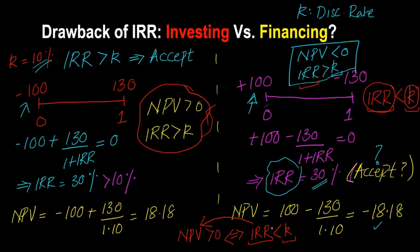This is a drawback of IRR because, as you can see, the decision rule with respect to IRR needs to be changed. For investment projects, IRR should be greater than the discount rate. For financing activities, we need to reverse that. But notice that NPV does not suffer from this drawback — NPV is always saying the same thing: accept the project if NPV is greater than zero, reject if NPV is less than zero. It doesn't matter whether you're talking about an investment or a financing decision — that rule always remains the same. It is in that sense that IRR has a drawback which NPV does not.